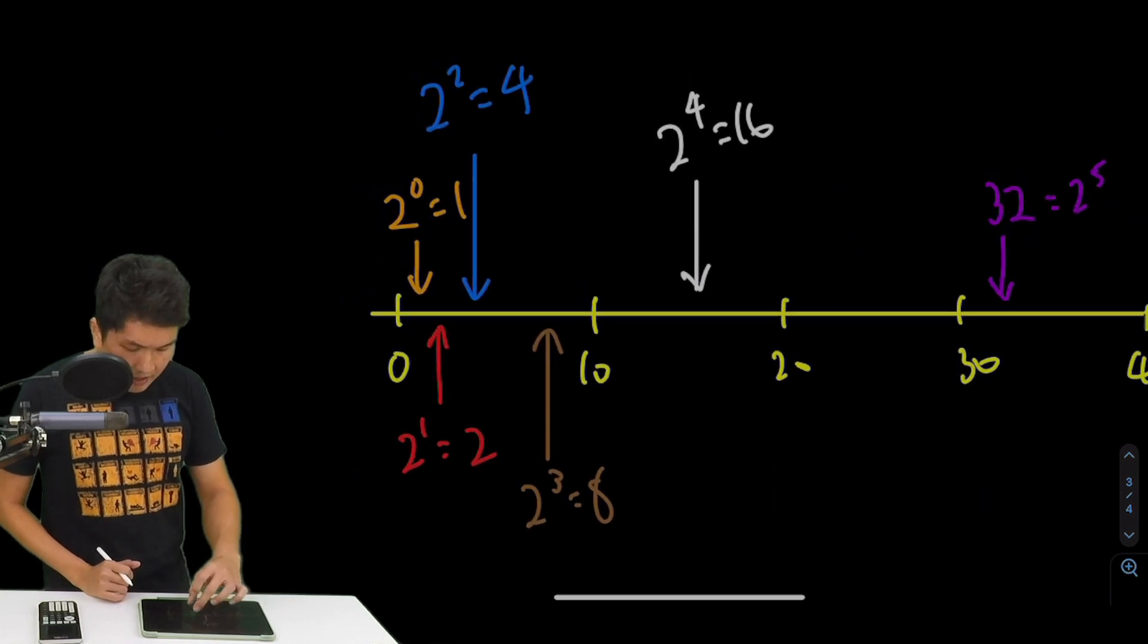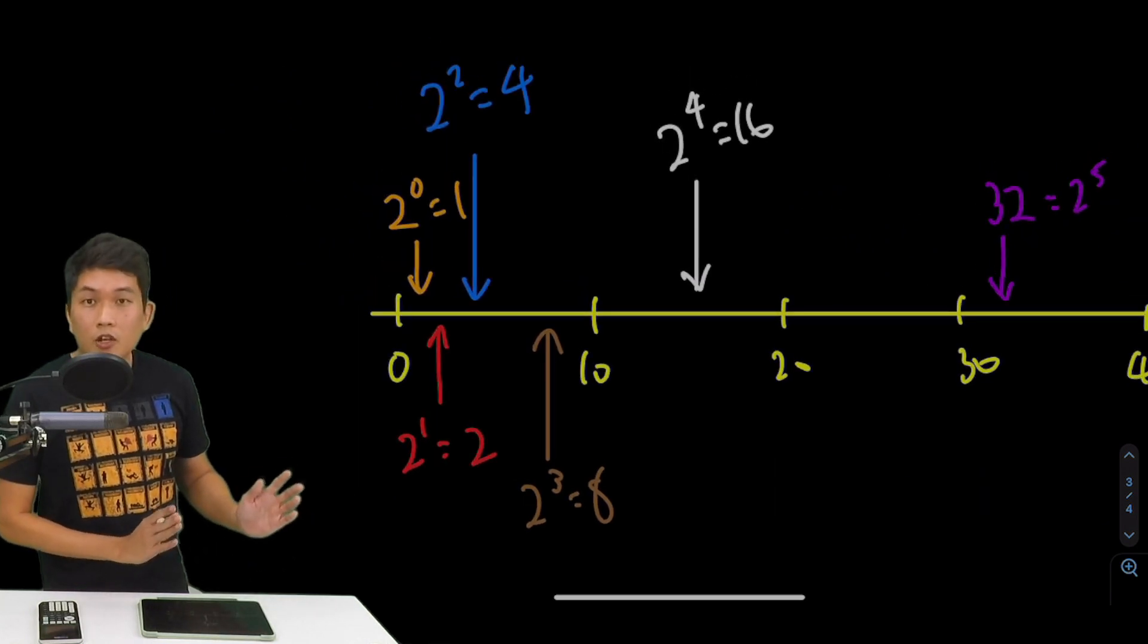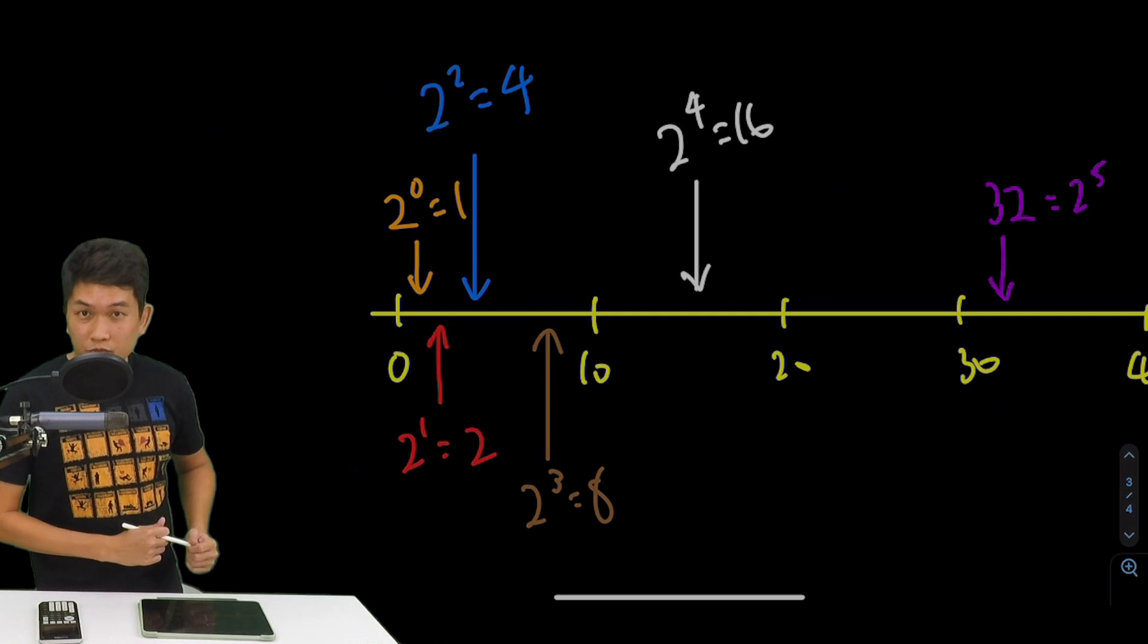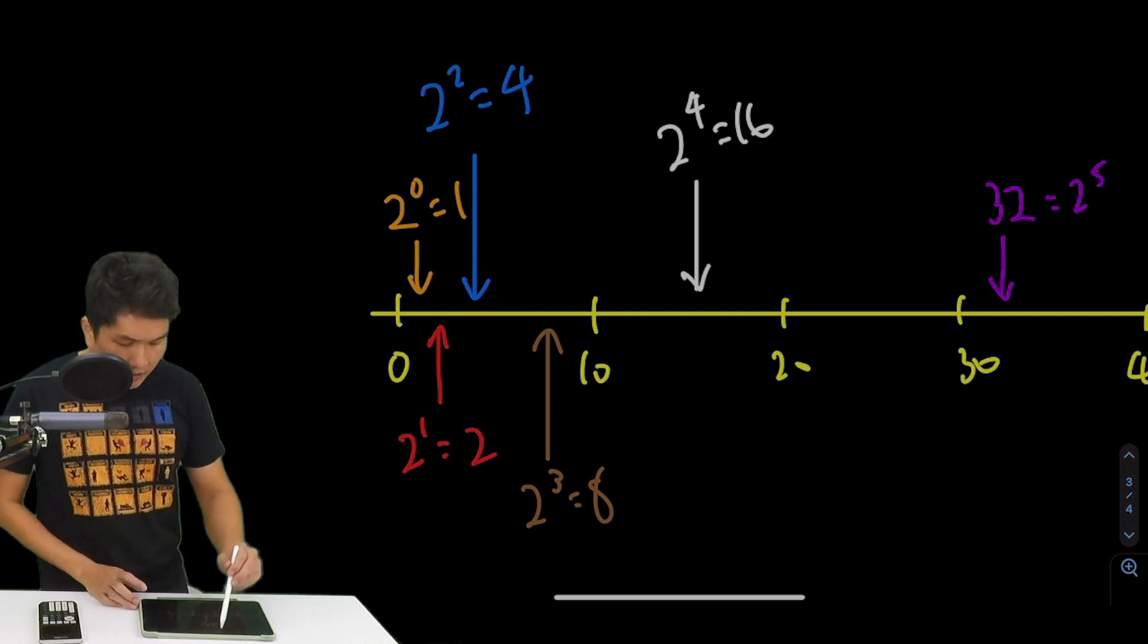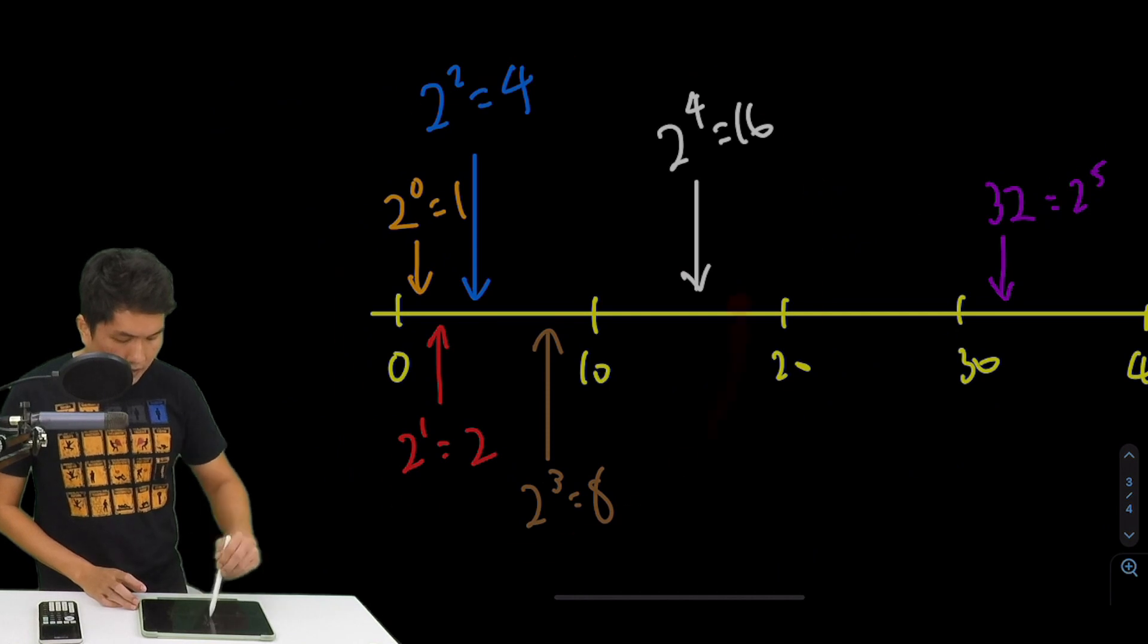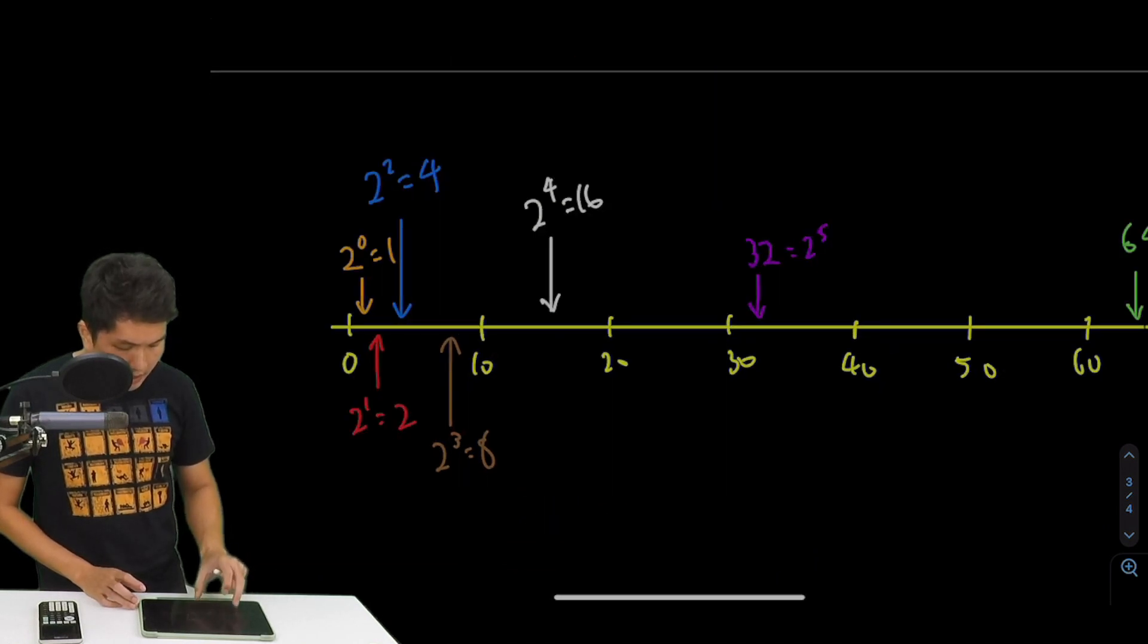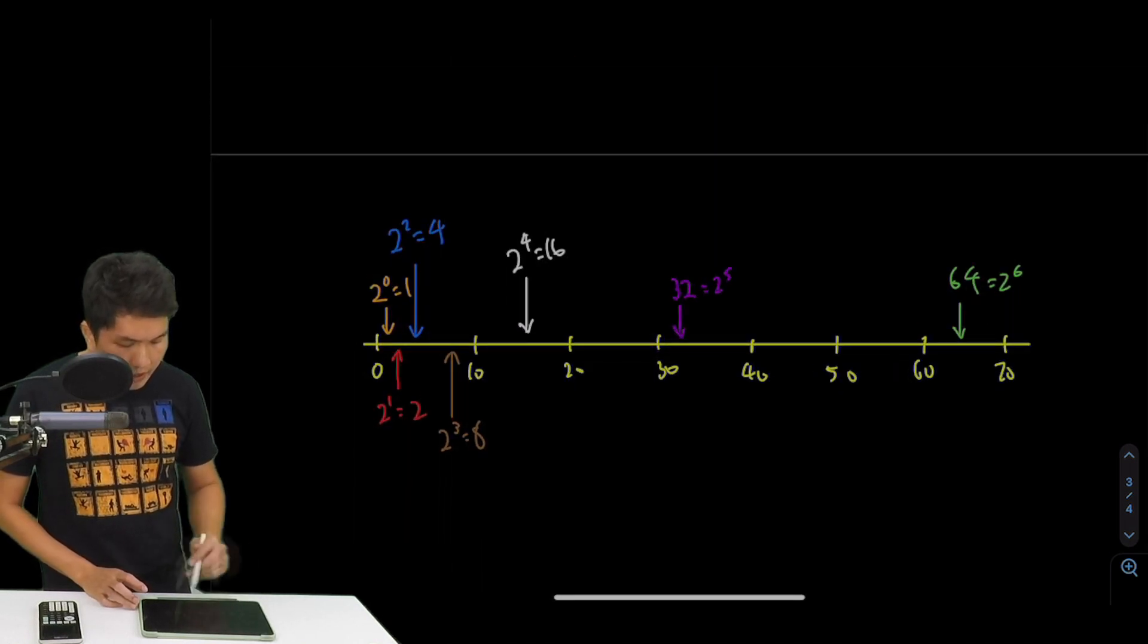So we can see a lot of clustering for lower powers of base 2. 2 to the power of 0 is 1, 2 to the power of 1 is 2. They all kind of clustered around here. But as you zoom out, you realize that the numbers are getting further and further apart.